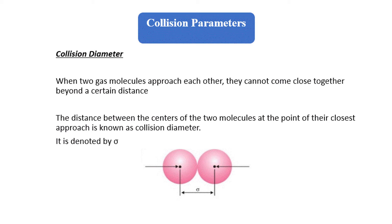so strong, or we can say that the molecules cannot come close together beyond a certain distance. The distance between the centers of two molecules at the point of their closest approach is known as collision diameter. It is designated by sigma.